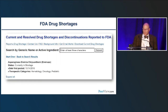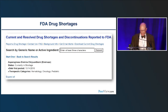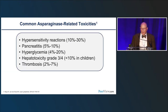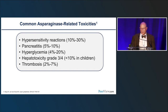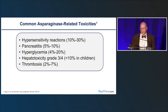Regarding shortages, the FDA drug shortage website showed that Erwinia was on that list. In terms of toxicities, hypersensitivities are probably the most common, followed by pancreatitis, hyperglycemia, hepatotoxicity, and thrombosis — those are the things we have to work through as we try to maintain dose intensity with this class of drugs.